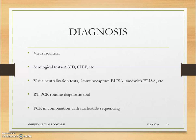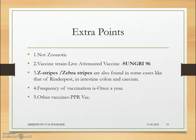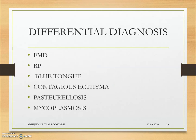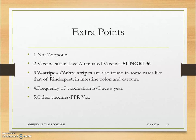For diagnosis, tentative diagnosis is made by observing clinical signs, history, vaccination status, and health status of animals. Virological tests include AGID, RT-PCR, ELISA, sandwich ELISA, and virus neutralization test. Differential diagnosis must rule out FMD, rinderpest, bluetongue, contagious ecthyma (orf), actinomycosis, and mycoplasmosis.